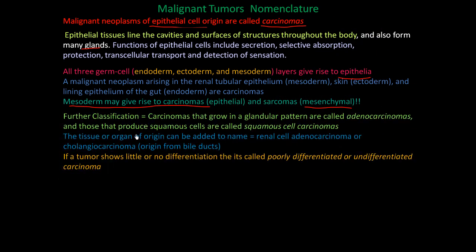Carcinomas can be further classified: those that grow in a glandular pattern are called adenocarcinomas — adeno means gland. Those that produce squamous cells, which are flat fish-like cells like your skin, are called squamous cell carcinomas.